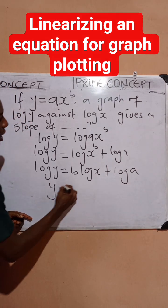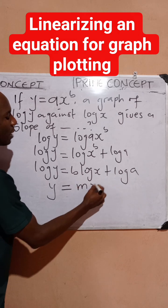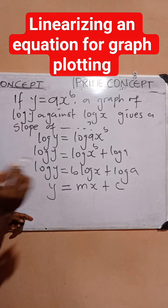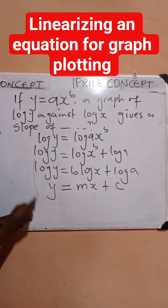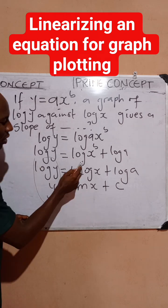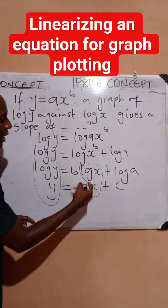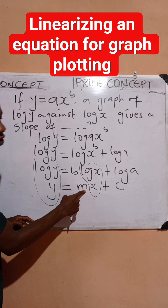...we have the equation of a straight line as y equals mx plus c, which simply means you're plotting log y on the y-axis, you're plotting log x on the x-axis, and m represents the slope. So it...